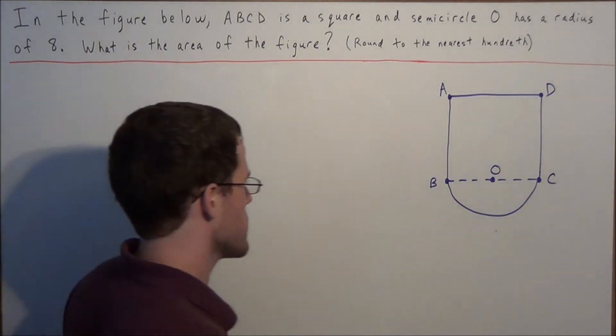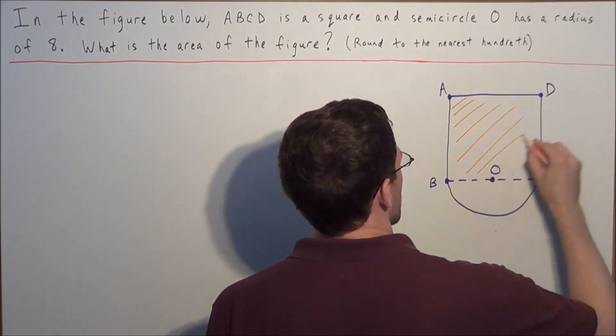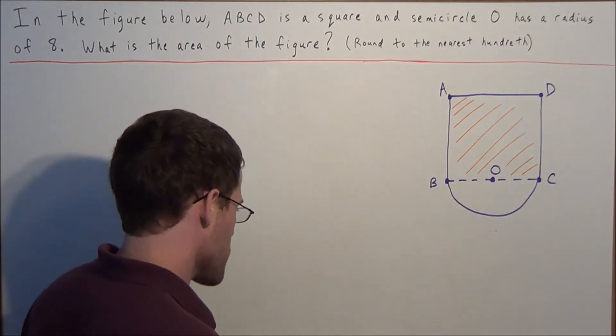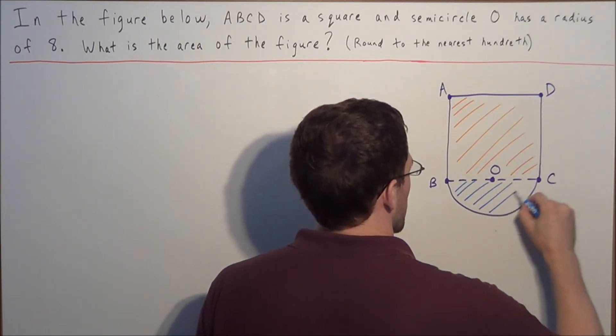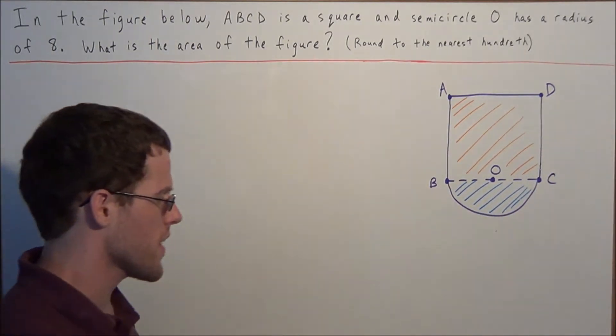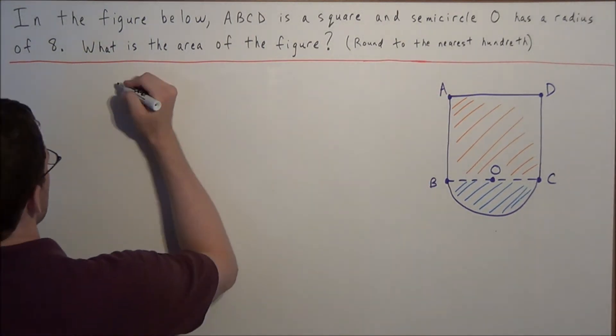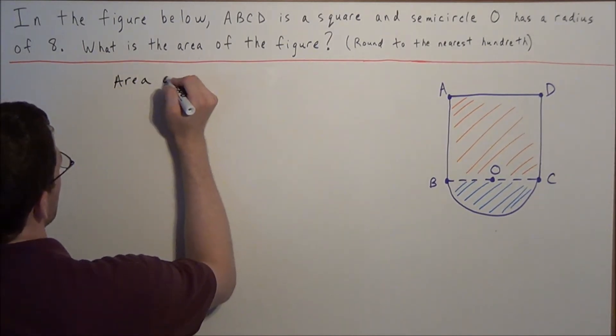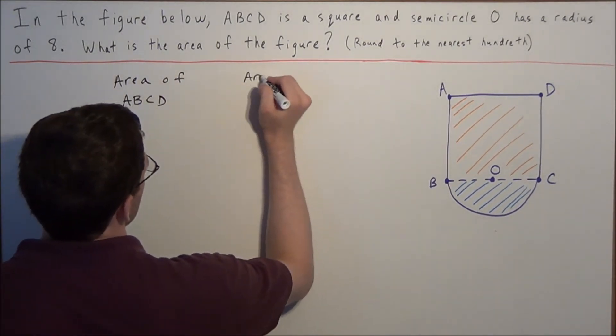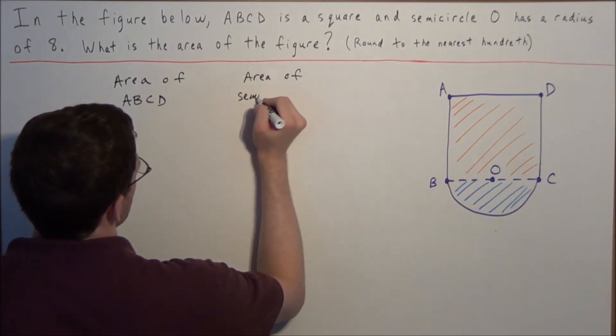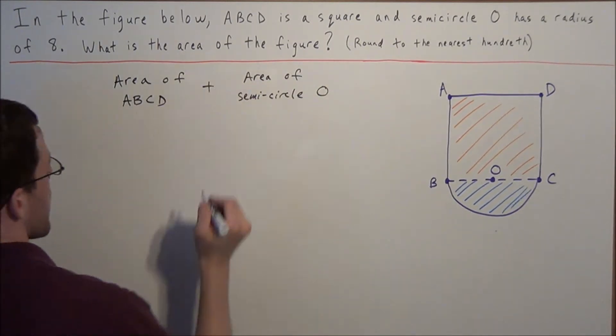So the strategy we want to use for this problem is we're going to find the area of the square, and once we find the area of the square, we need to find the area of the semicircle. And then what we need to do is we're going to add these two areas together and that will tell us the area of the full figure.